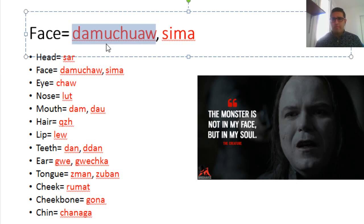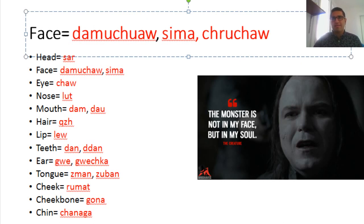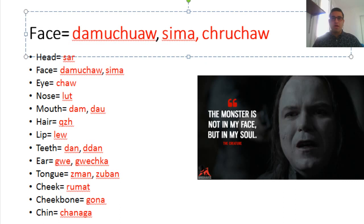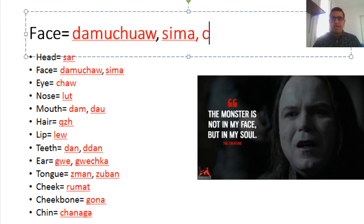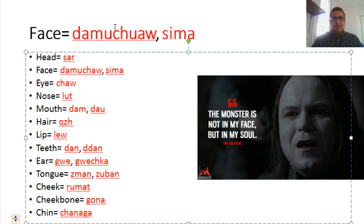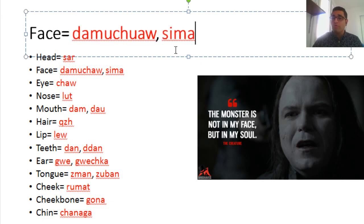There's another funny word I heard in Erbil — in the Hawler accent we have chongcha, which means face, but it has a negative connotation. If you use this word for face, it implies the person is ugly or abnormal. Sima is usually used in writing and is more academic — more literary and beautiful for written use.